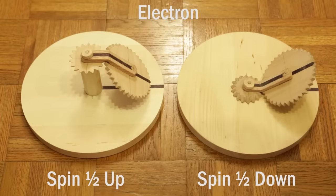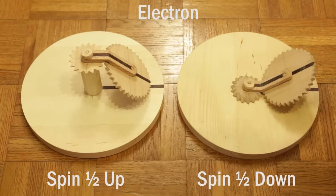Electrons can take two spin states, spin up and spin down, as represented by these two variations on the model. Both models are still spin one half. That is, they still have to go around twice to get back to where they started.